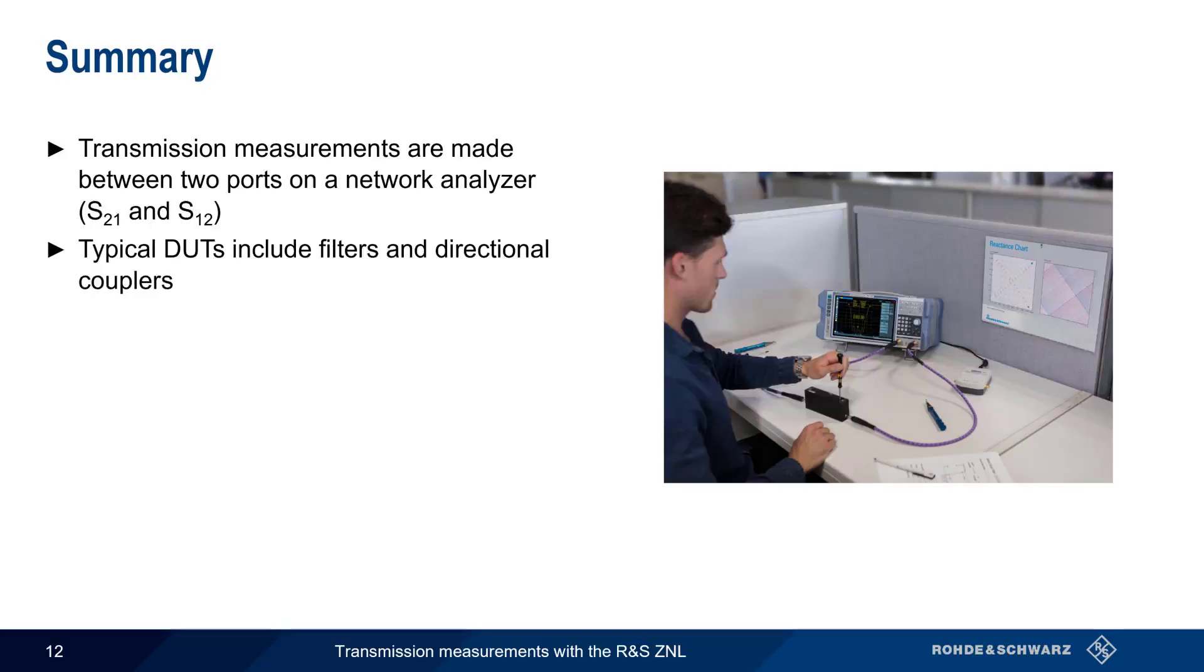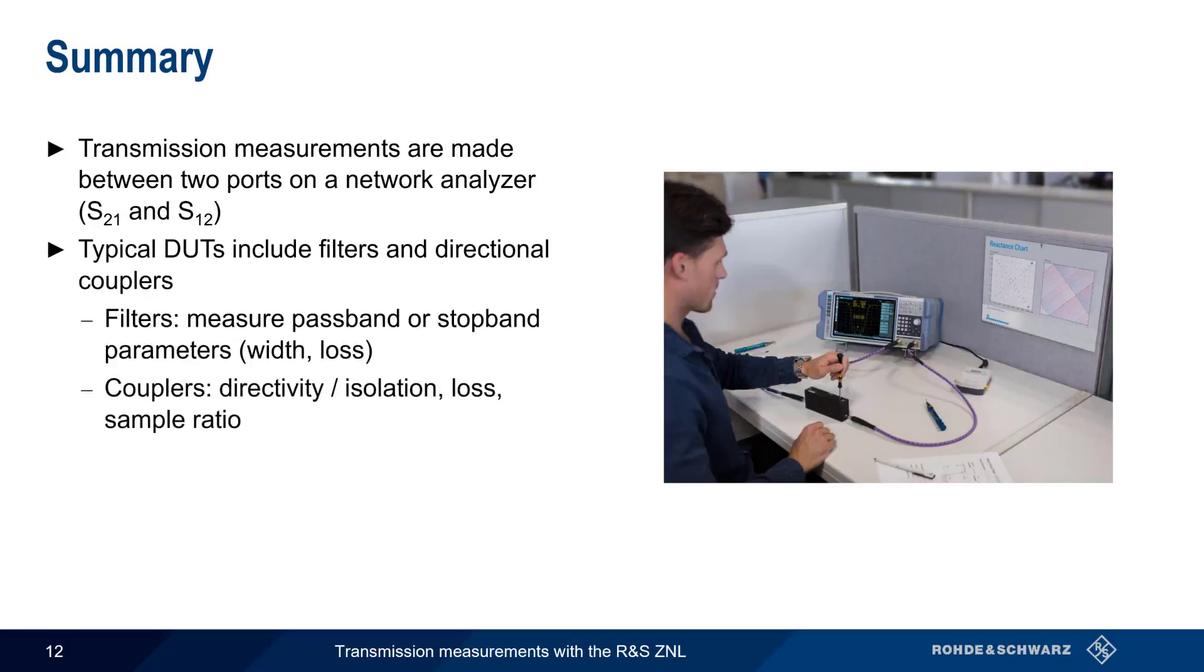For filters, we usually want to measure the width of the passband or stopband, as well as the loss inside and outside of these bands. For couplers, we often look at the directivity or isolation of the coupler, as well as how much signal appears at the sample port. And lastly, we can use markers and automatic measurement functions to improve both the accuracy and the speed of our measurements.